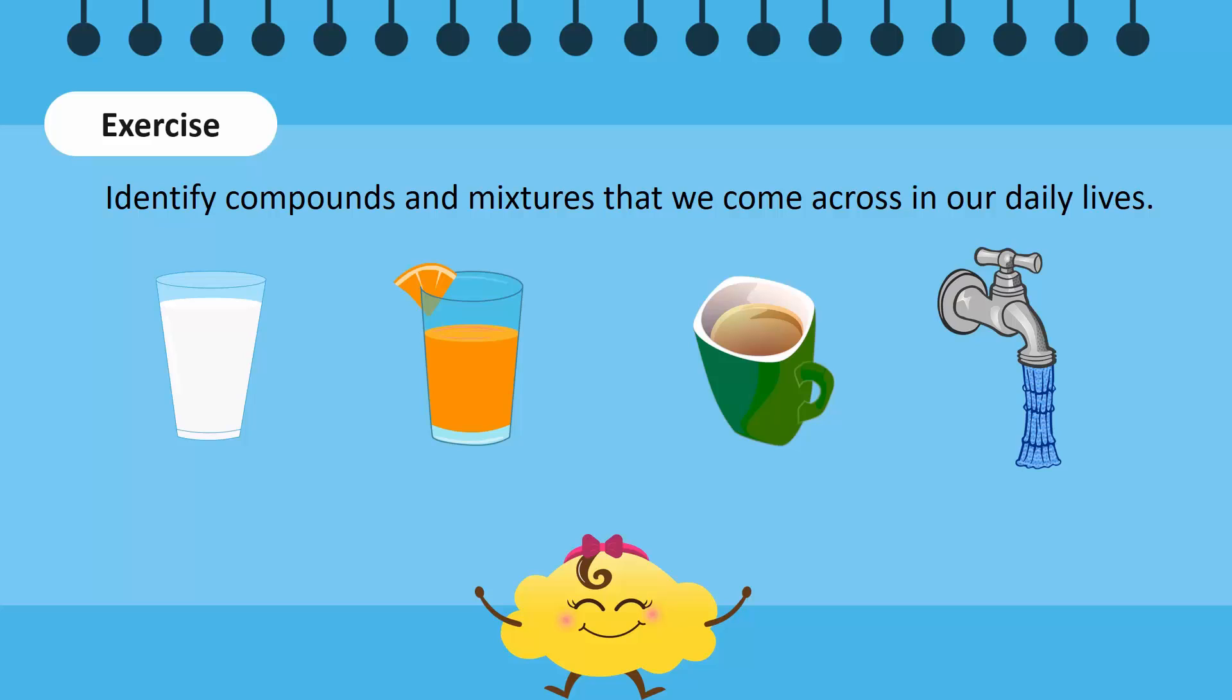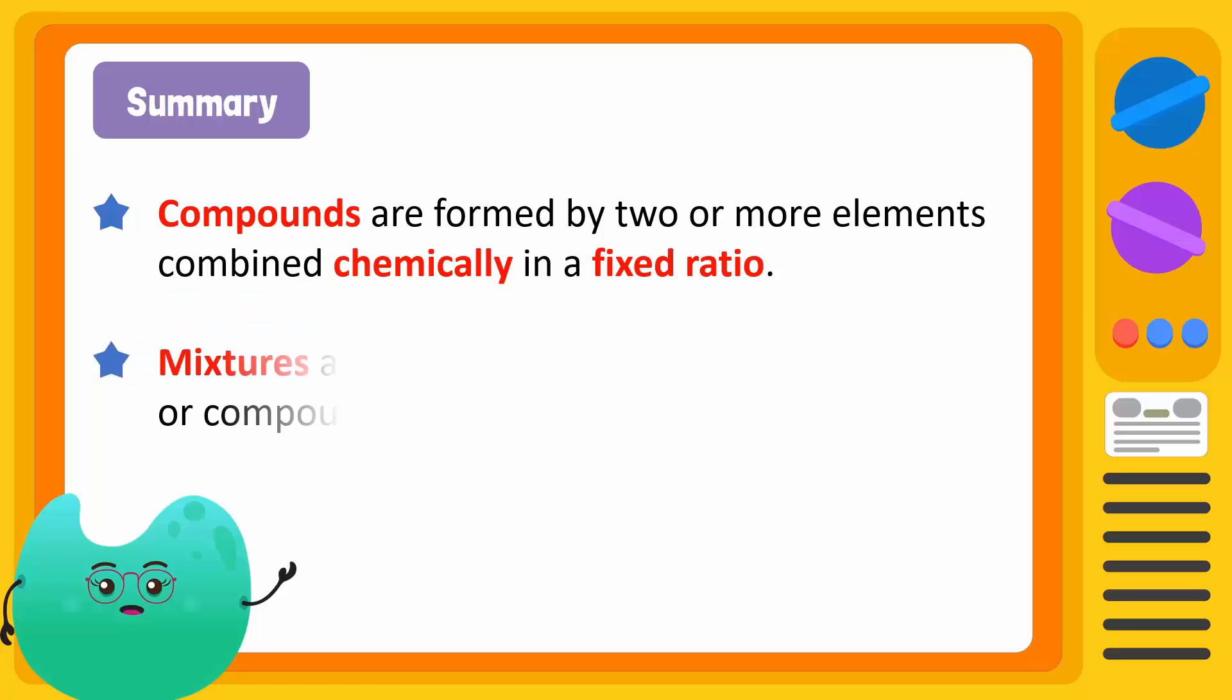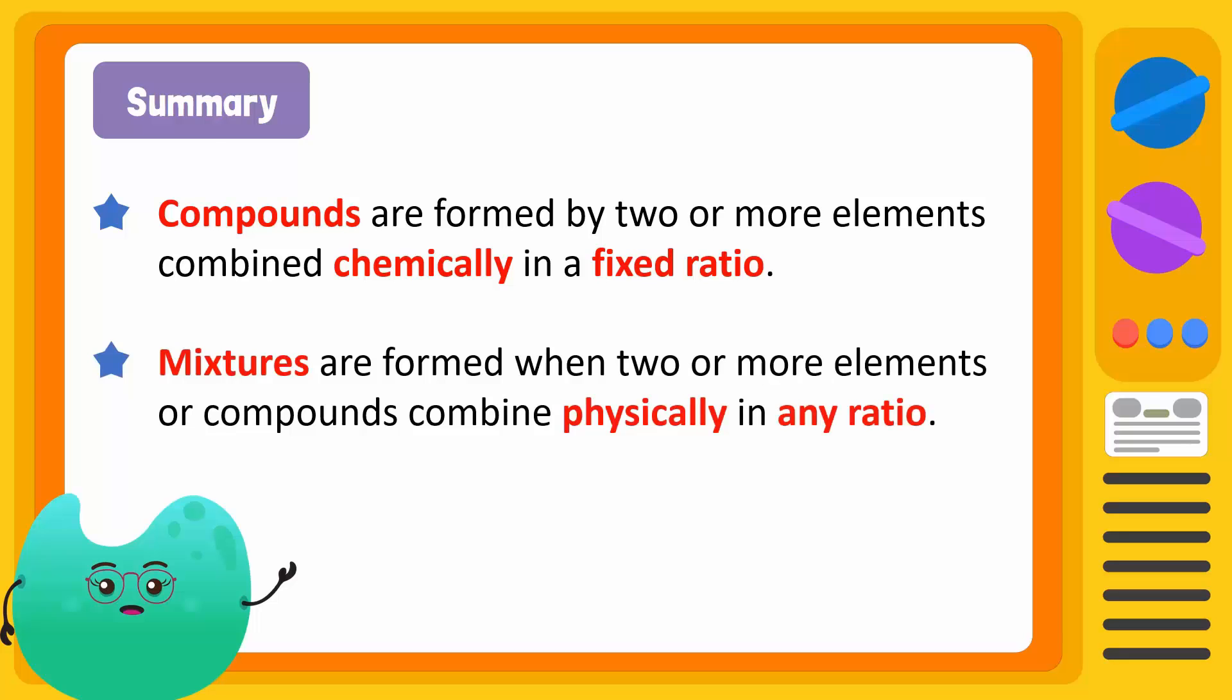Let's summarize. Compounds are formed by two or more elements combined chemically in a fixed ratio. Mixtures are formed when two or more elements or compounds combined chemically in any ratio.